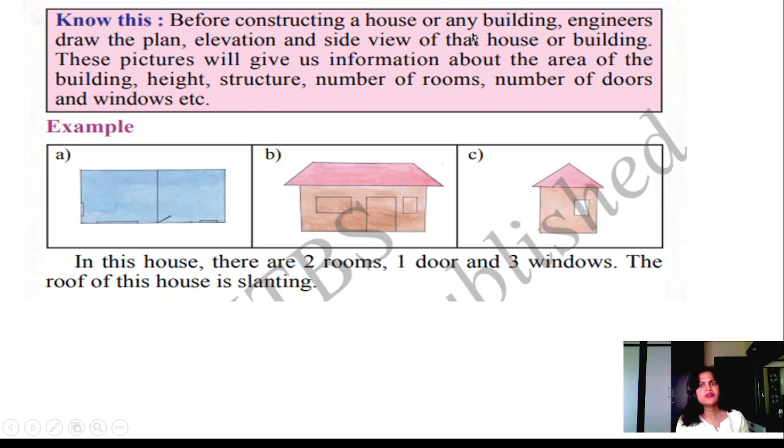Before constructing the house or any building, engineers draw the plan, elevation, and side view of the house or building. Now 3D view is also given using help of computers. They will show you how it looks like before building that house. These pictures give us information about the area of the building, height, structure, number of rooms, number of doors and windows, etc. It is top view, front view, and back view. In this house there are 2 rooms, 1 door, and 3 windows. The roof of this house is slant.